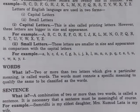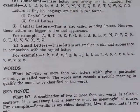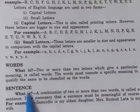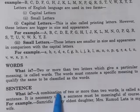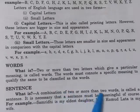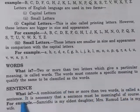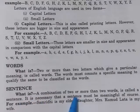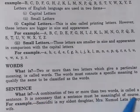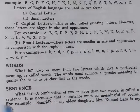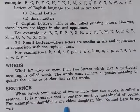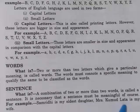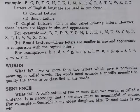What is a sentence? A sentence is a combination of two or more than two words. It is necessary that a sentence must be meaningful. For example: 'Samridhi is my eldest daughter.' 'Mrs. Kumudlata is my wife.'